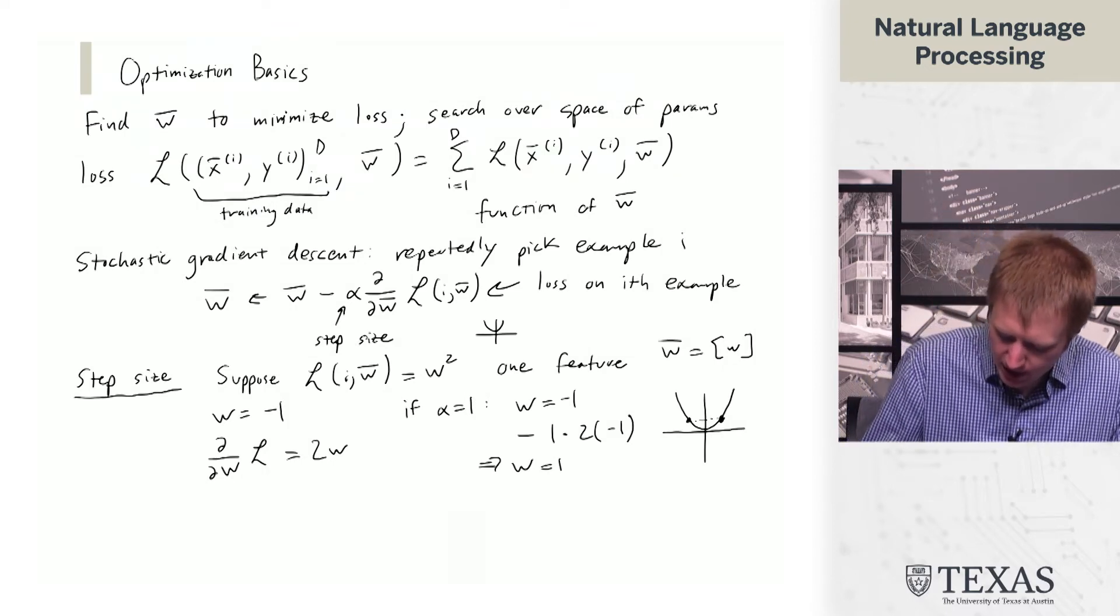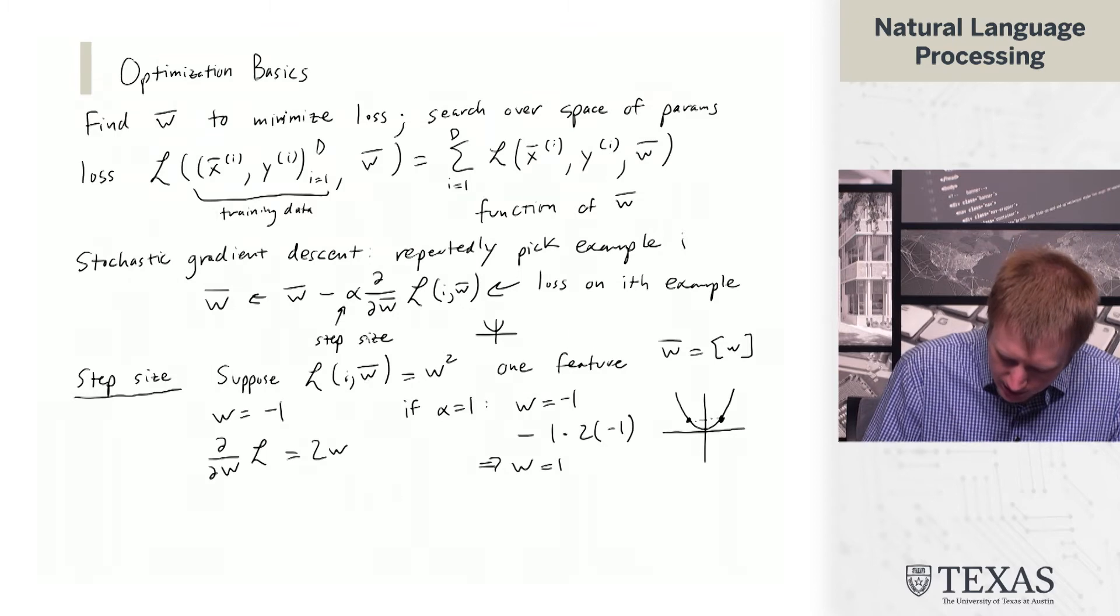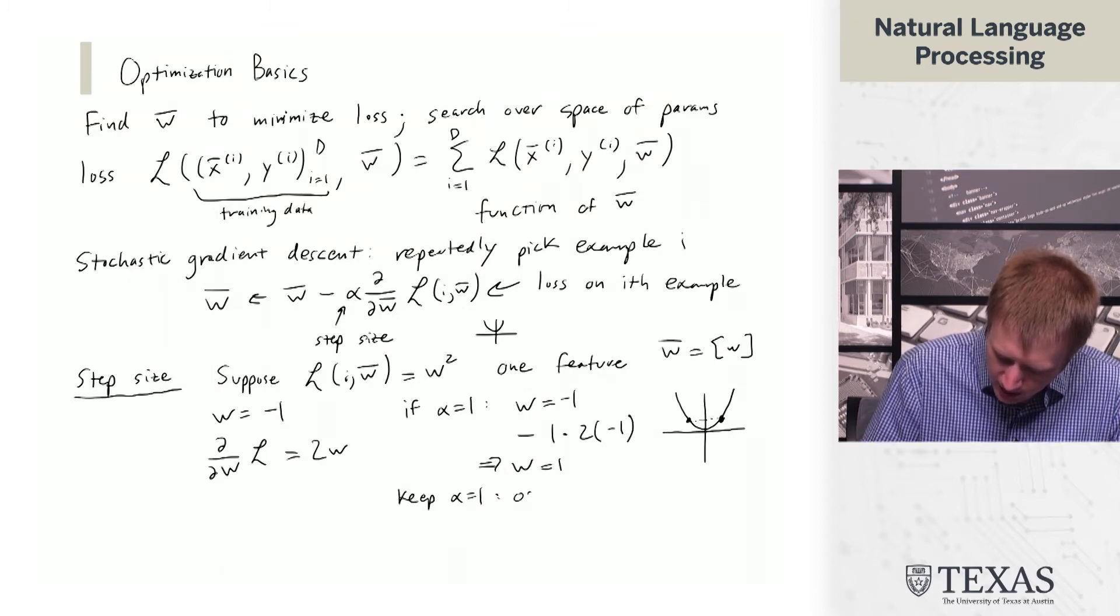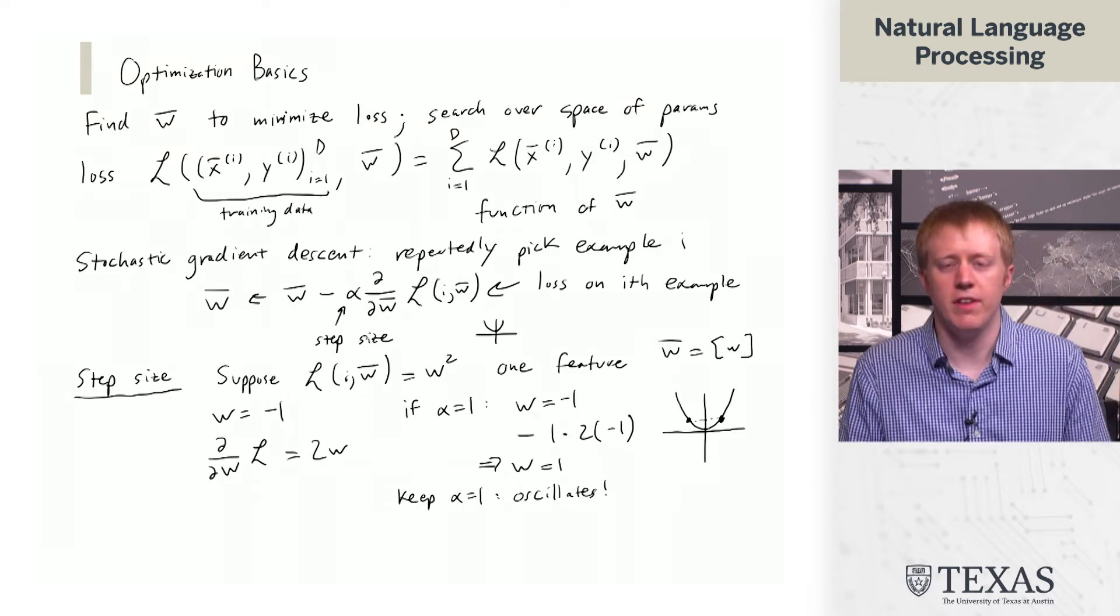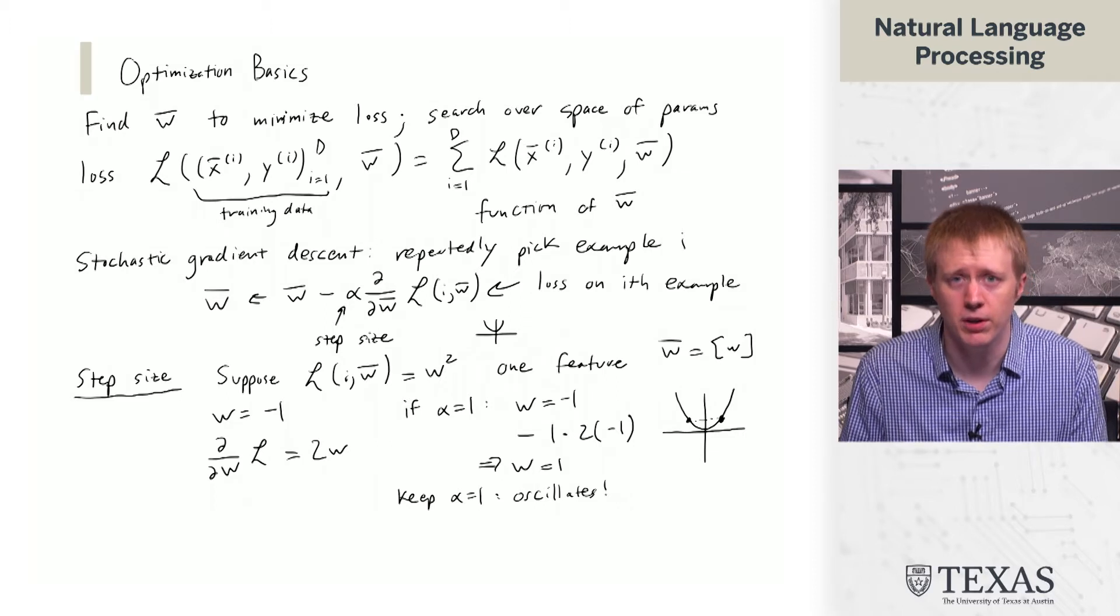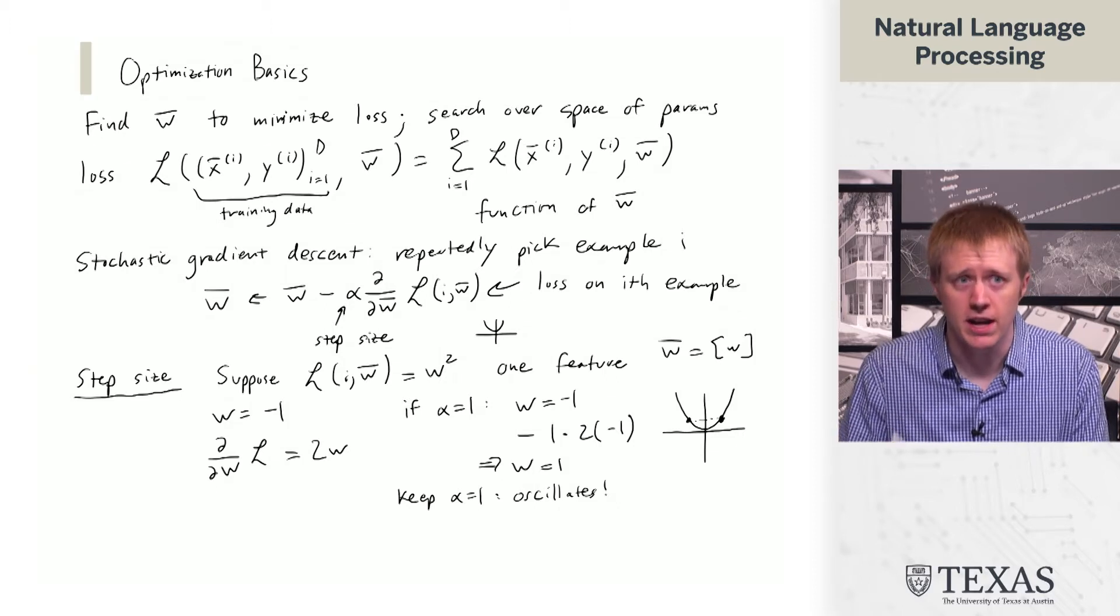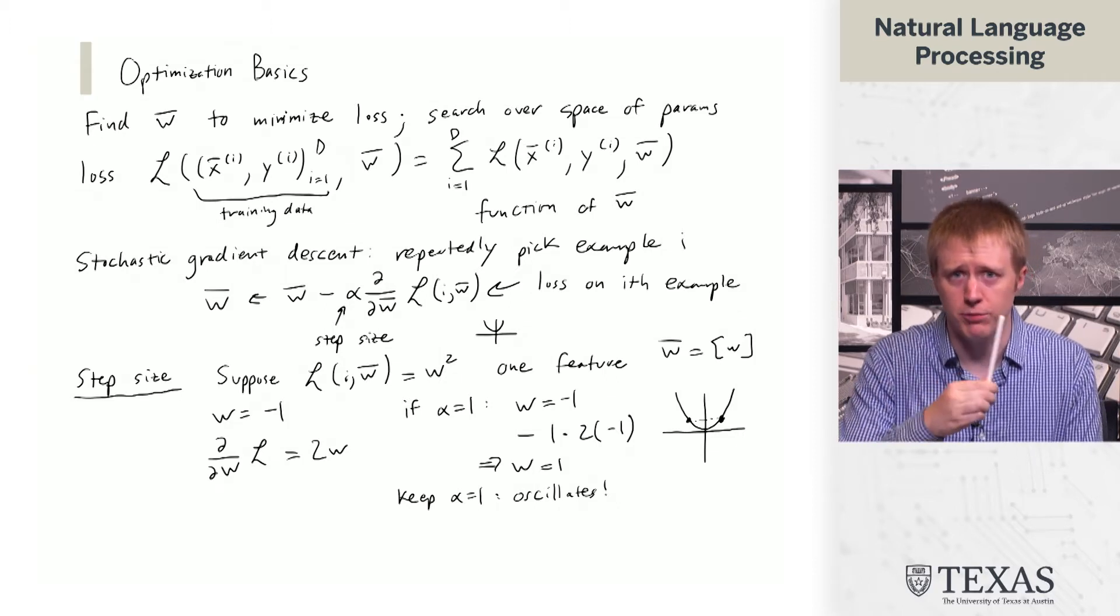If you keep alpha equal to one, what happens is that this oscillates. This will never converge to the true minimum, which is at W equals zero. Instead, it just bounces back and forth.